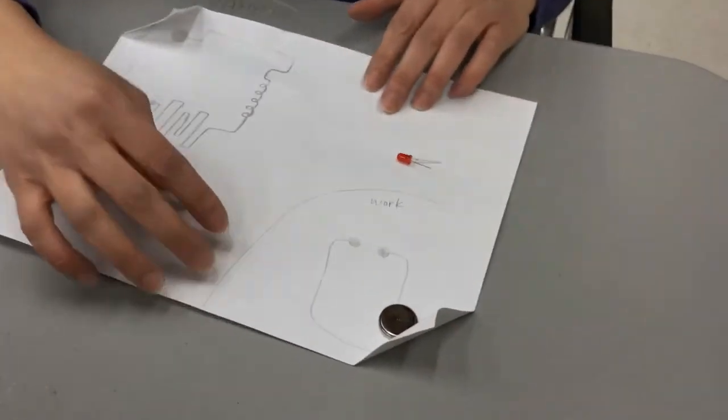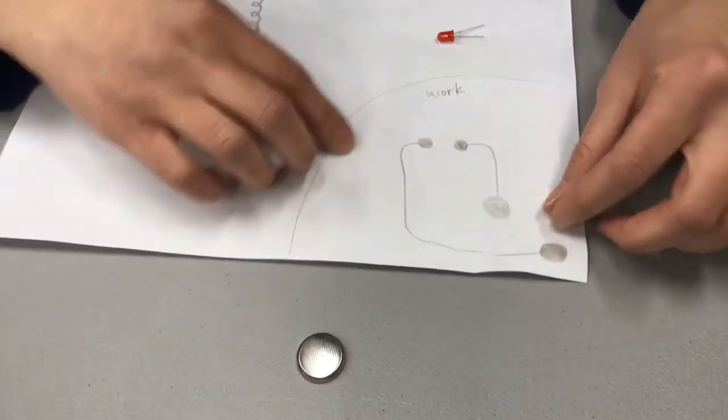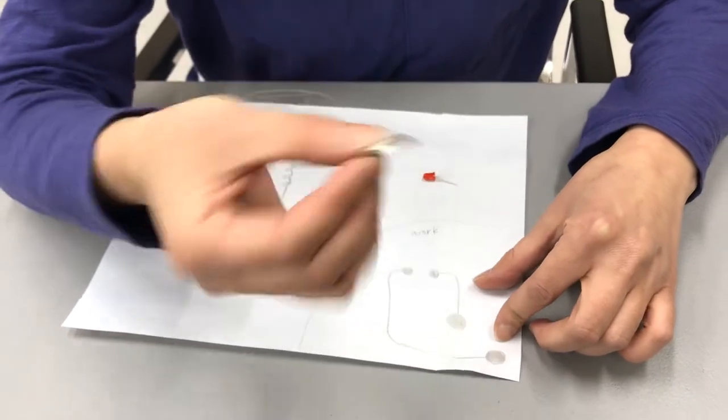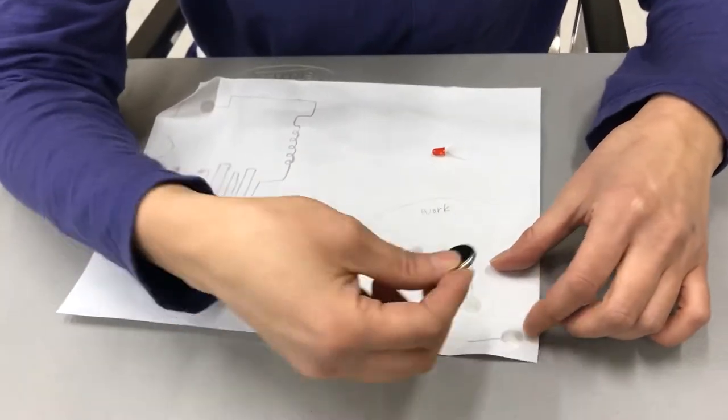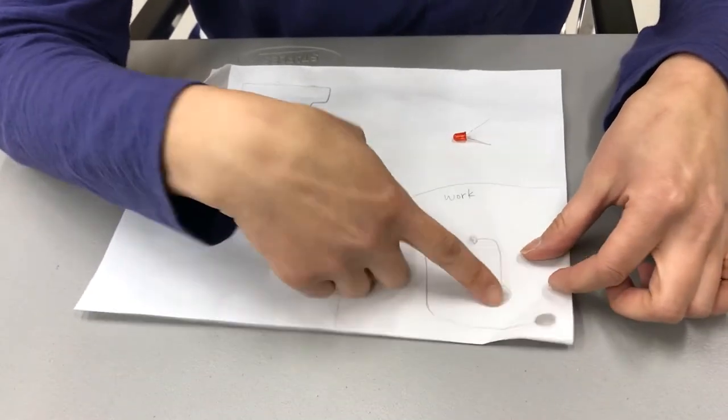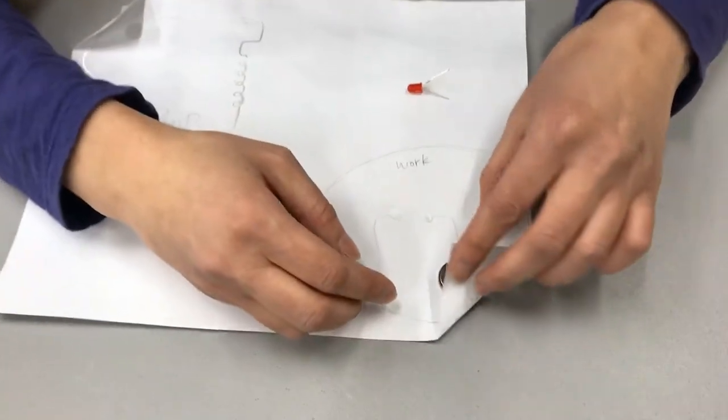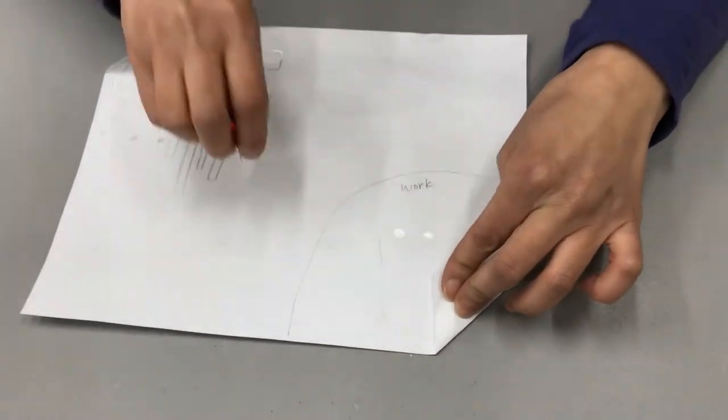This way, you create a circuit by using a coin cell battery. It's three volts. Then by putting it down, you draw it out. Now you put it here, I'll put the light...